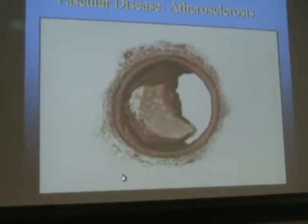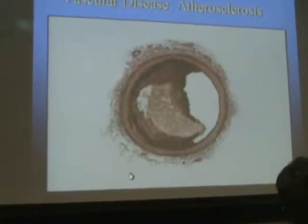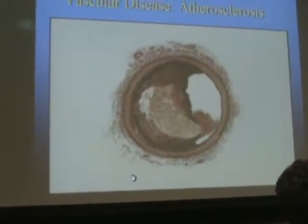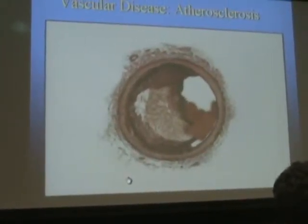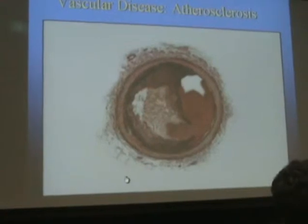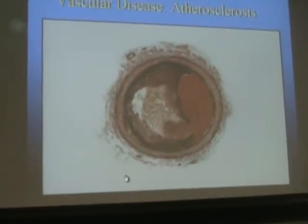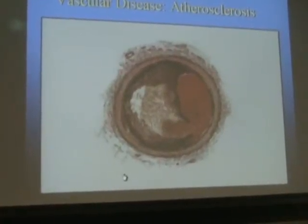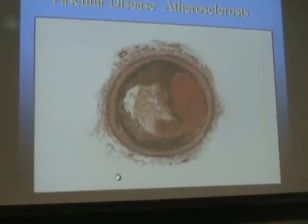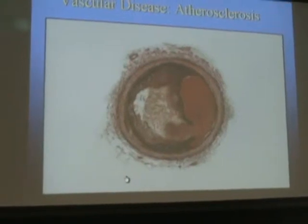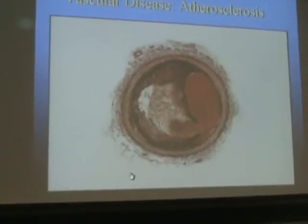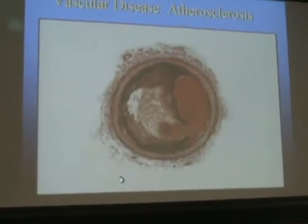And they may be relatively stable but unstable as you see there. Lesions may rupture and lead to acute closure of the vessel with a clot. The clinical events would be stroke, heart attack, leg pain, or even death.